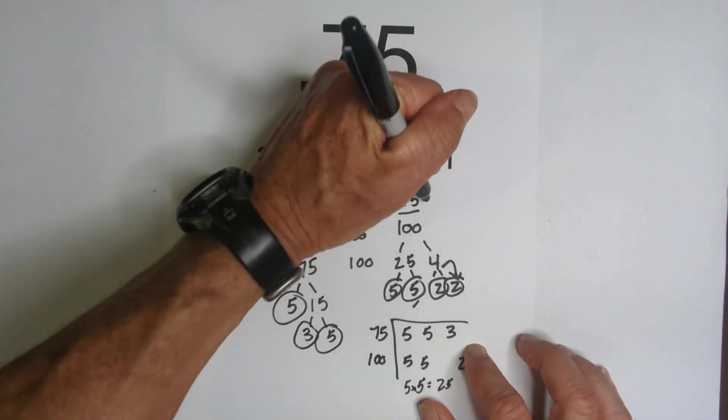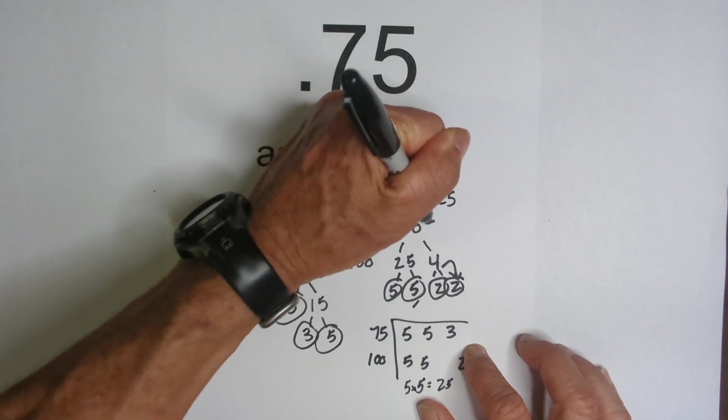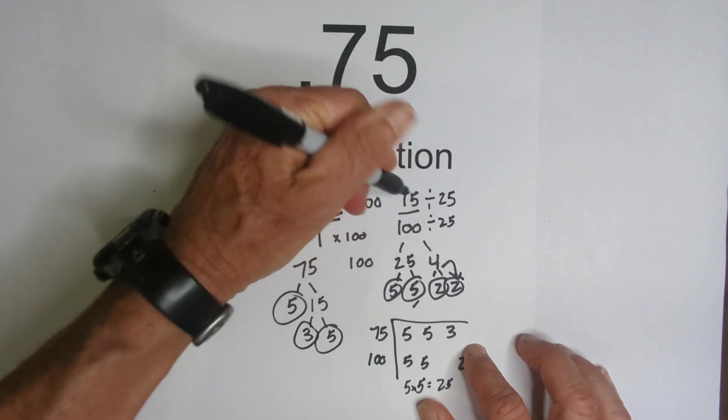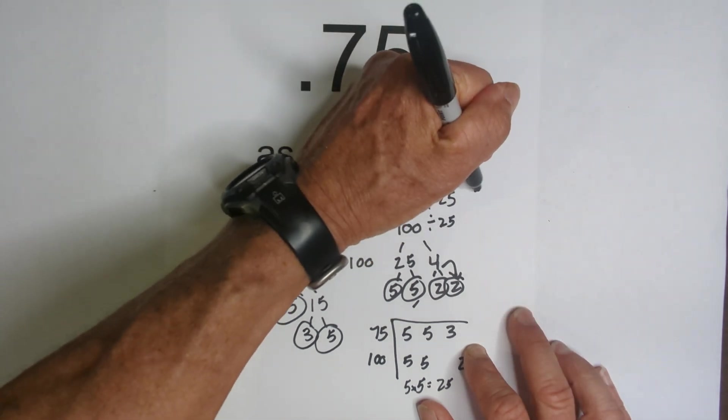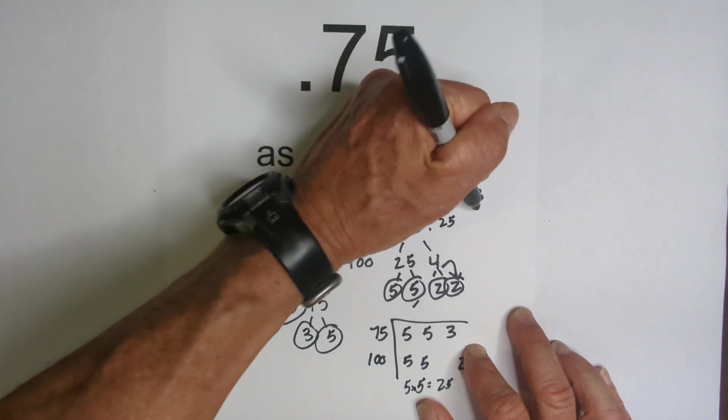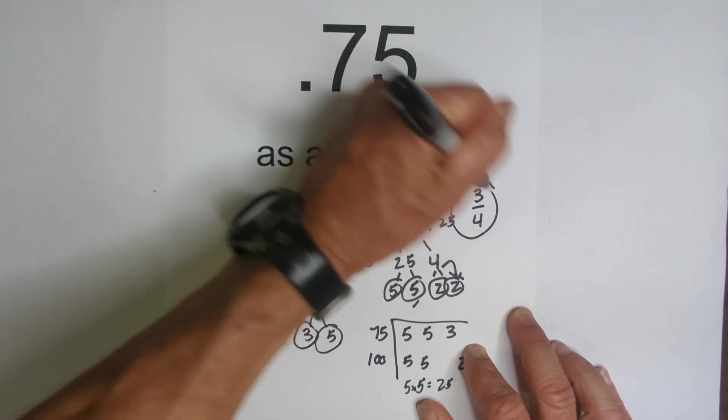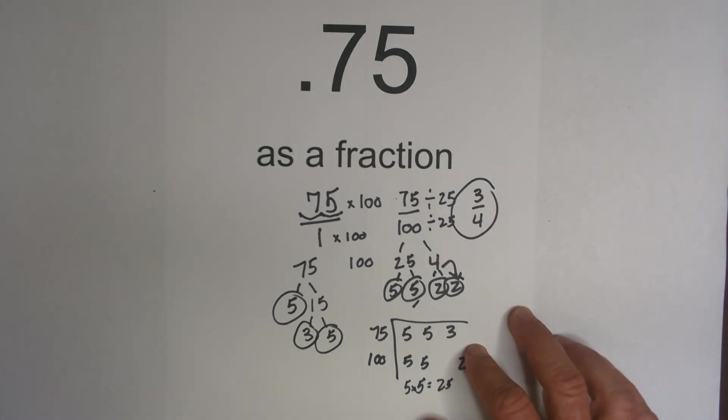So we're just going to divide numerator and denominator by 25. 75 divided by 25 is 3. 100 divided by 25 is 4. So 75 hundredths as a fraction is 3 fourths.